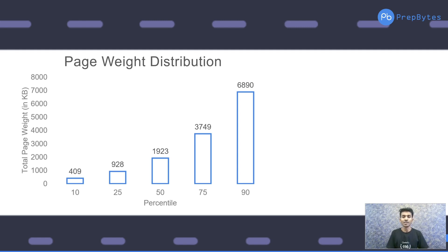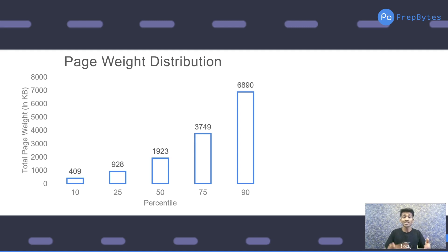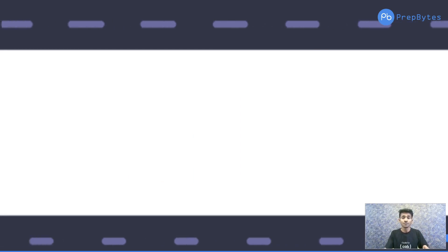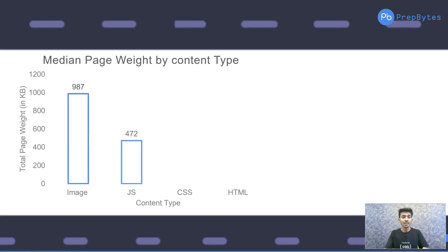Looking at the graph here, the top 90th percentile web pages have more than seven megabytes of data — about 6,890 kilobytes. The more data or resources a web page has, the more time it takes to load. Responsiveness and production time are also increased because there are so many HTML pages, JavaScript files, and CSS files to account for.